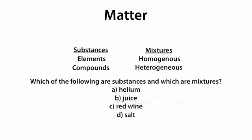An example question we might see is, which of the following are substances and which are mixtures? So let's start with A, helium. If we look at the periodic table, we see that helium is listed as an element. So since we know that elements are substances, we're going to call that a substance.